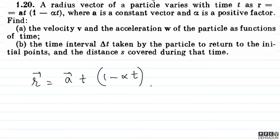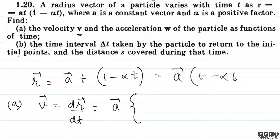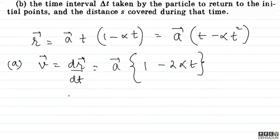Since a vector is a constant vector, the velocity v vector is simply dr vector upon dt. We expand r as a vector multiplied by (t minus alpha t squared). Since a vector is constant, it comes out, and differentiating: t differentiates to 1, and minus alpha t squared differentiates to minus 2 alpha t. So the velocity vector is a vector multiplied by (1 minus 2 alpha t).